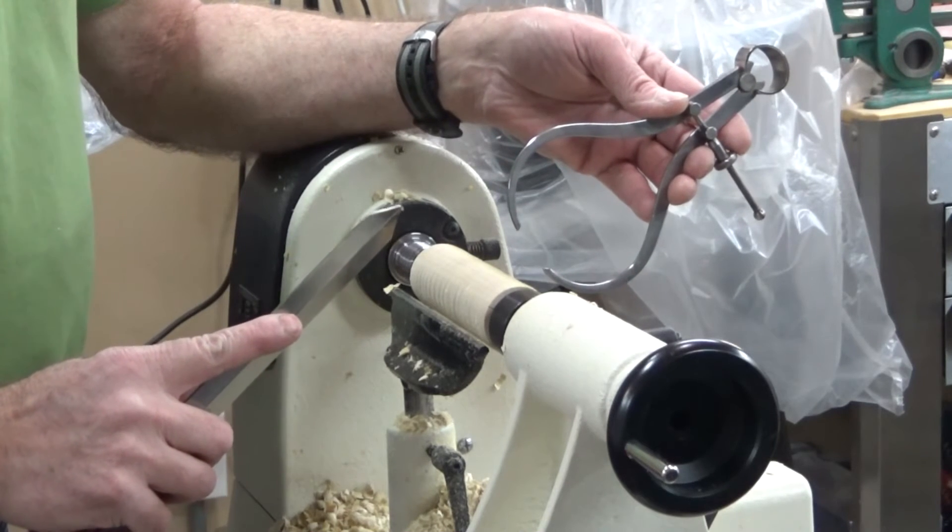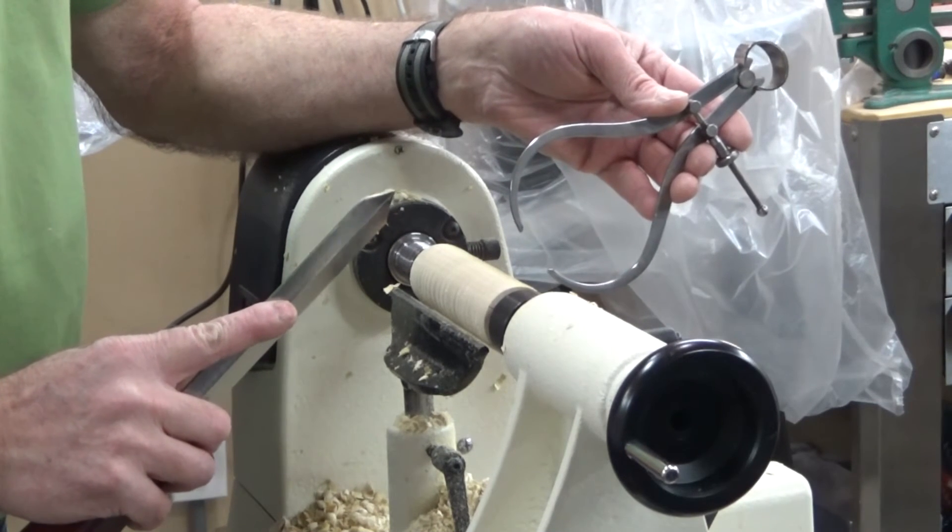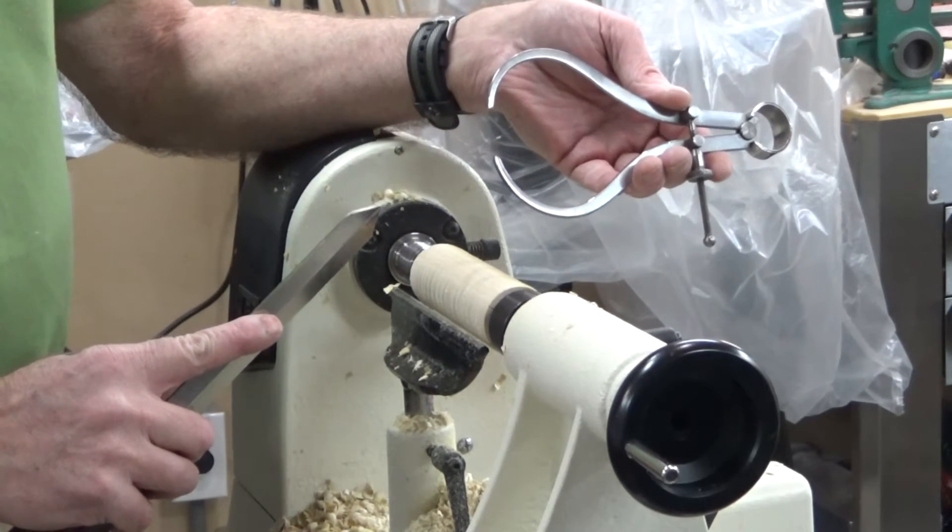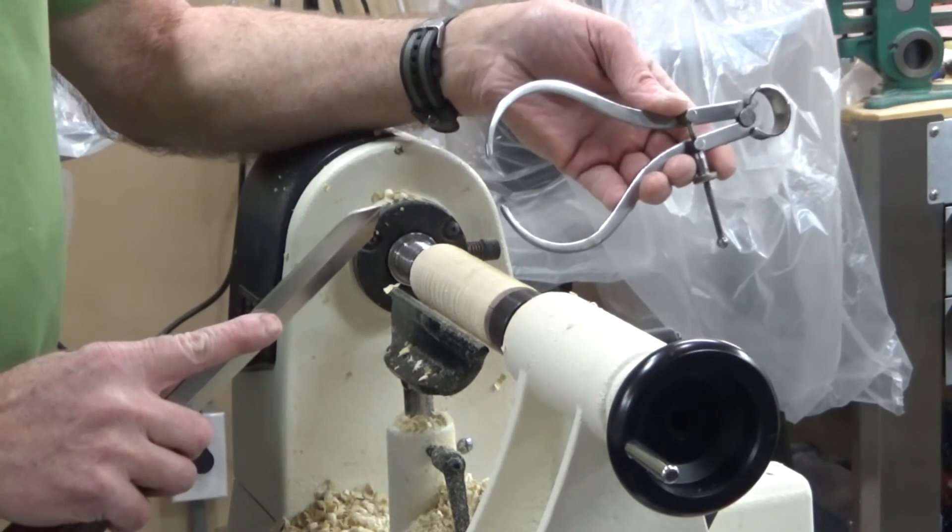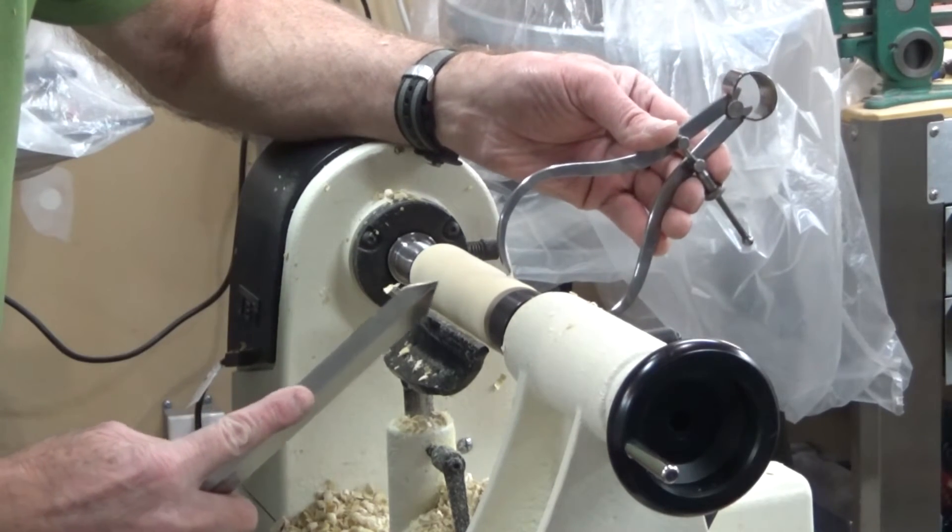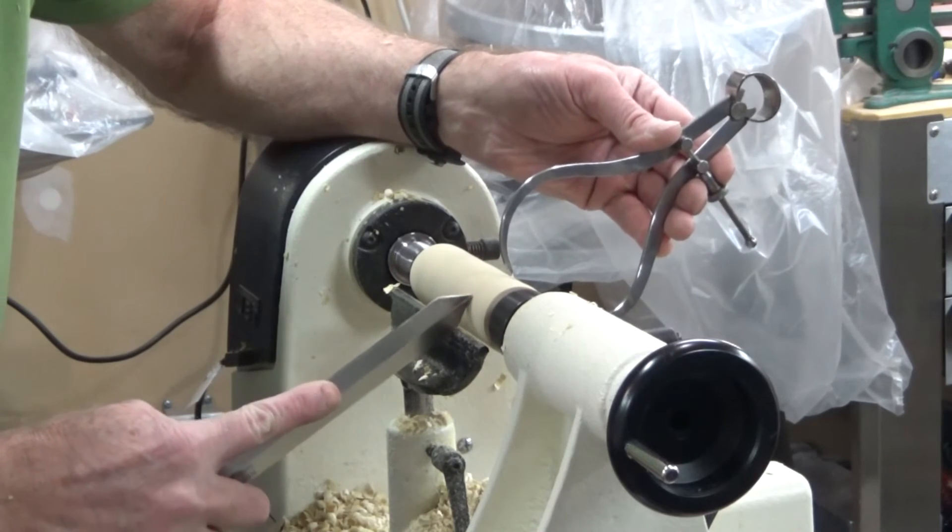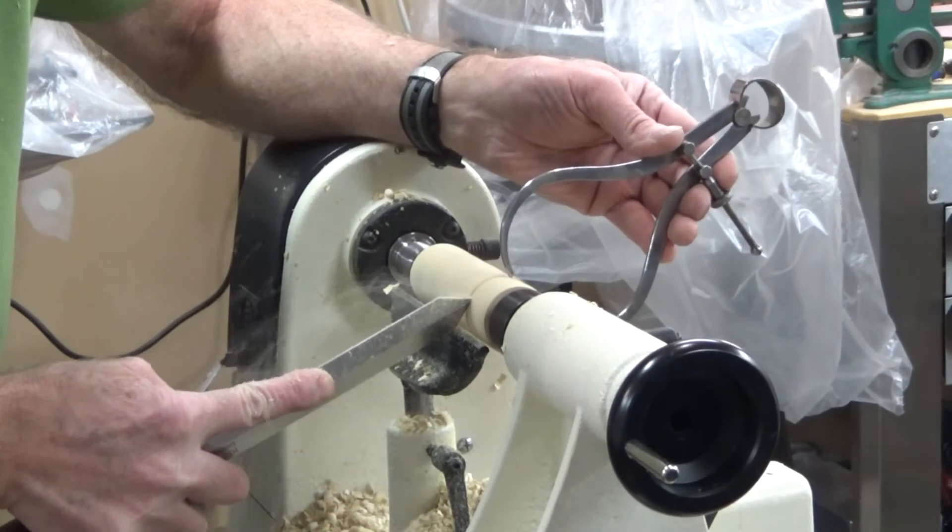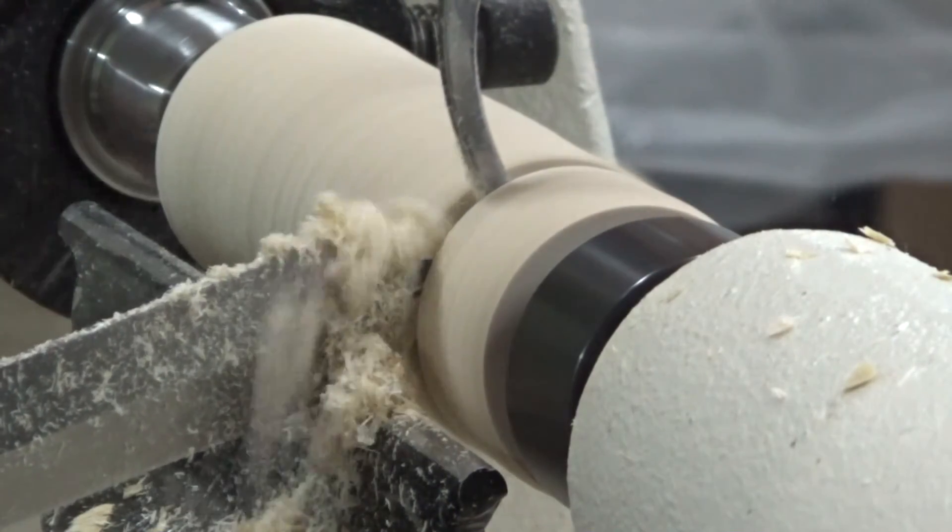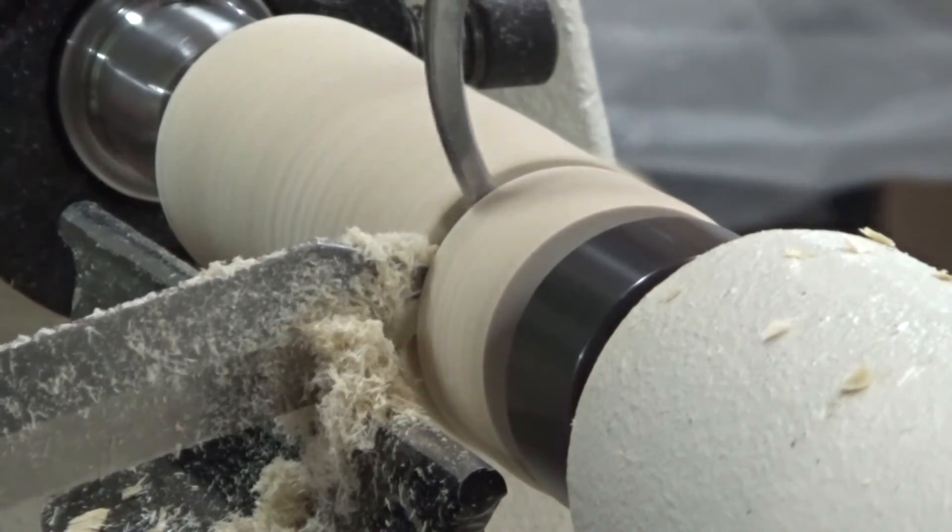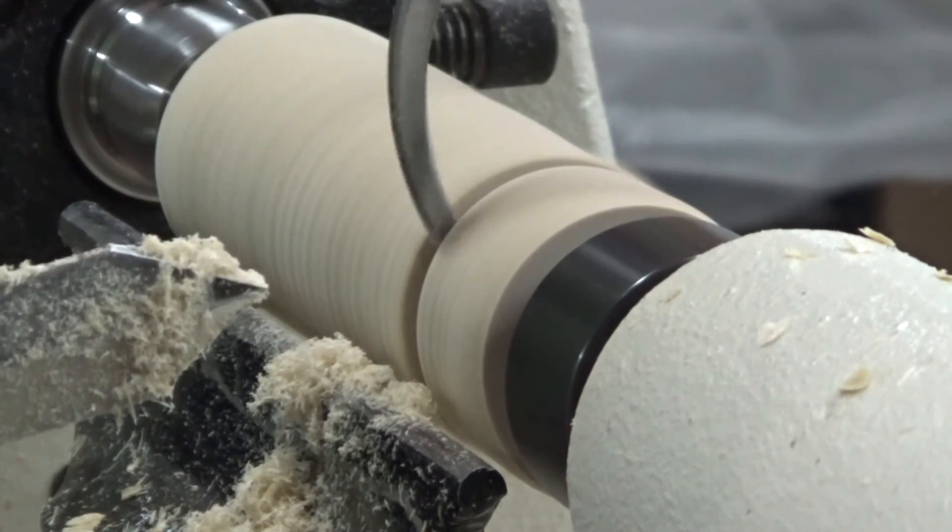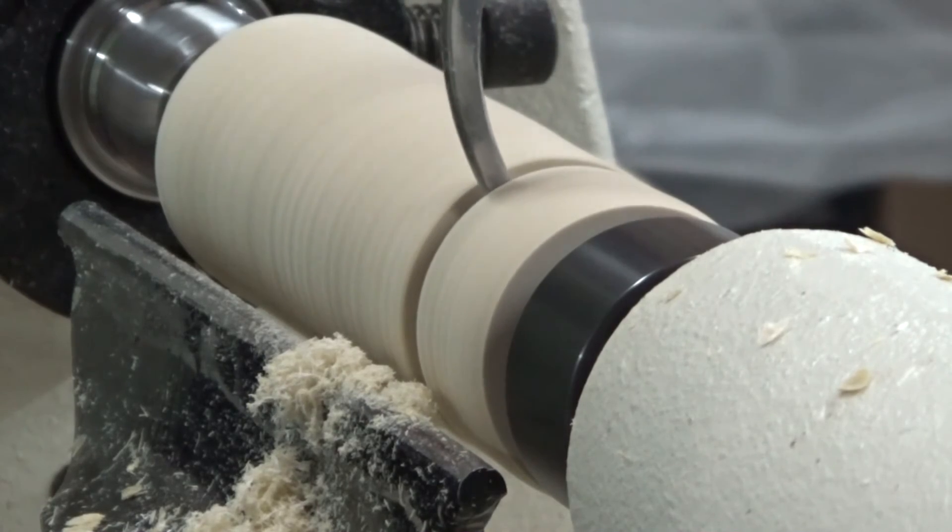Yet another use of the parting tool would be to make cuts in the wood to a specific dimension. In this case I've set my calipers to exactly one inch. Let's take a look at how we make the cut. Let the calipers ride gently on the piece of wood, start to make our cut. And now we have our wood sized to the proper dimension.